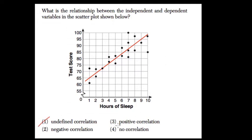Undefined would be a vertical line. No correlation would be the points scattered everywhere. Negative correlation would be a line where the height decreases as x increases. So this is a positive correlation, or just like a positive slope.